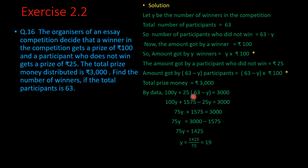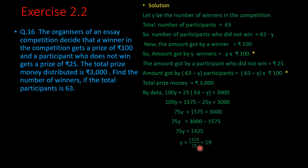We solve the bracket: multiply 25 with 63 and 25 with −y. So it becomes 100y + 1575 − 25y = 3000. Combining like terms 100y and −25y gives 75y. The equation becomes 75y + 1575 = 3000. Transposing 1575: 75y = 3000 − 1575 = 1425. Therefore y = 1425 ÷ 75 = 19. So the number of winners is 19.